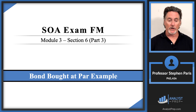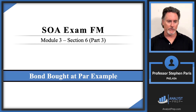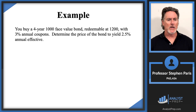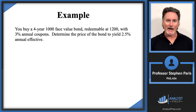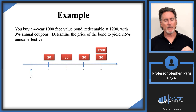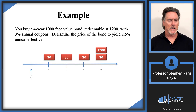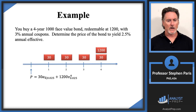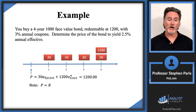In this video we're going to talk about a bond bought at par. This is the third video in a three-part series on bond amortization tables. The example: buy a four-year $1,000 face value bond redeemable at $1,200 with 3% annual coupons. First, determine the price to yield 2.5% annual effective. The coupon amounts are $30 at the end of years one through four, plus the $1,200 redemption value at year four. The price — the present value of all payments at 2.5% — turns out to be exactly $1,200.